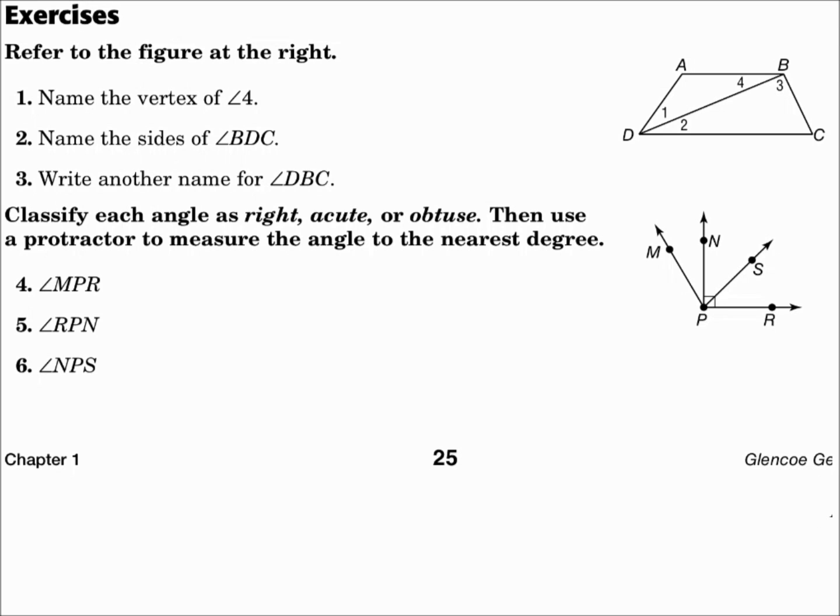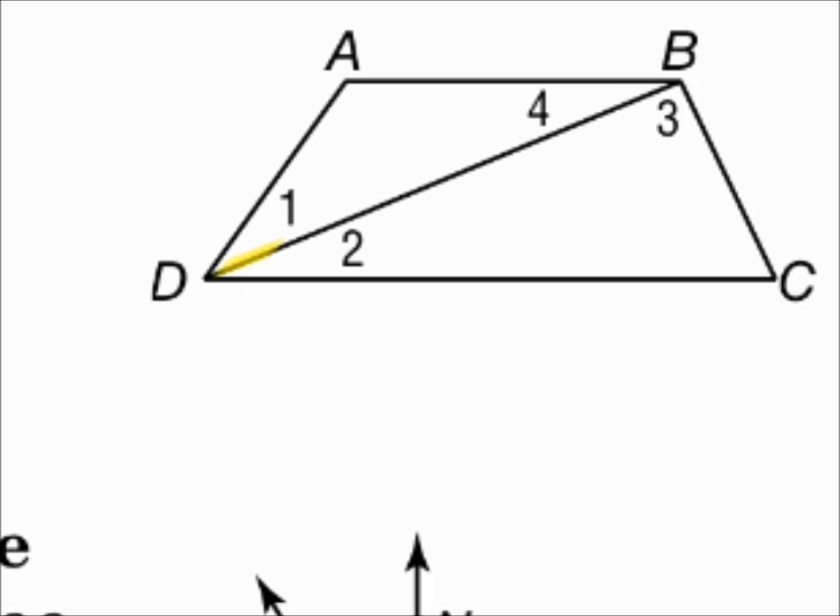Number three. Write another name for angle DBC. Here's angle DBC with B as the vertex. You could call it angle CBD, writing it in reverse order, or you could call it angle 3. Those are two other names for angle DBC.